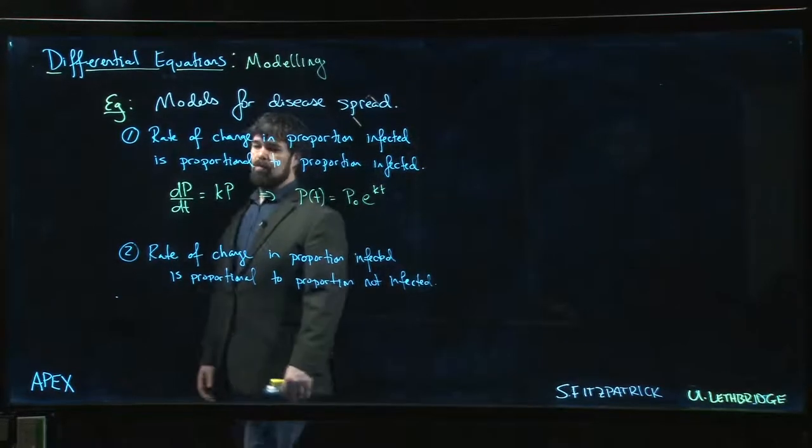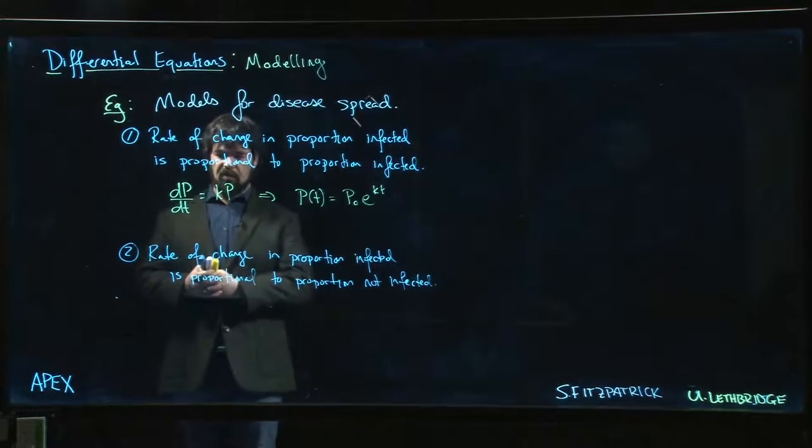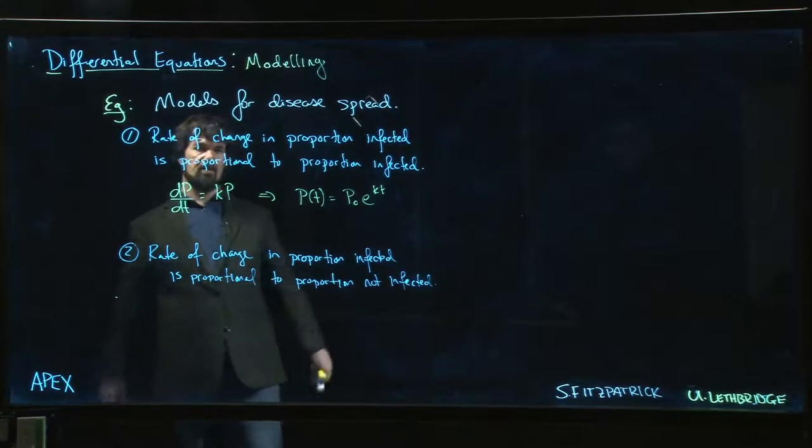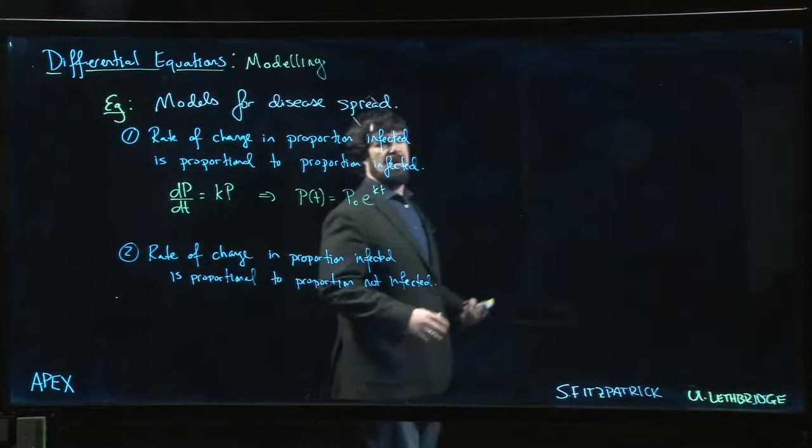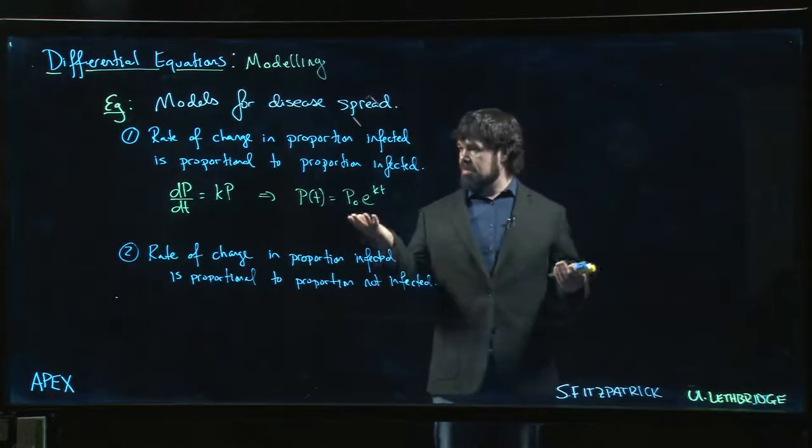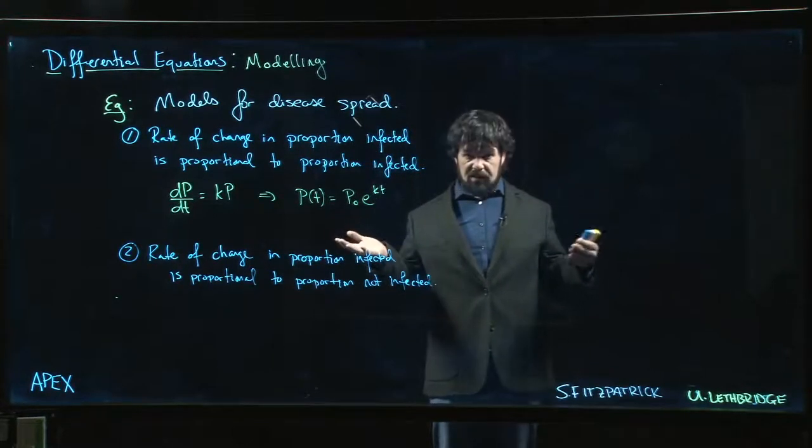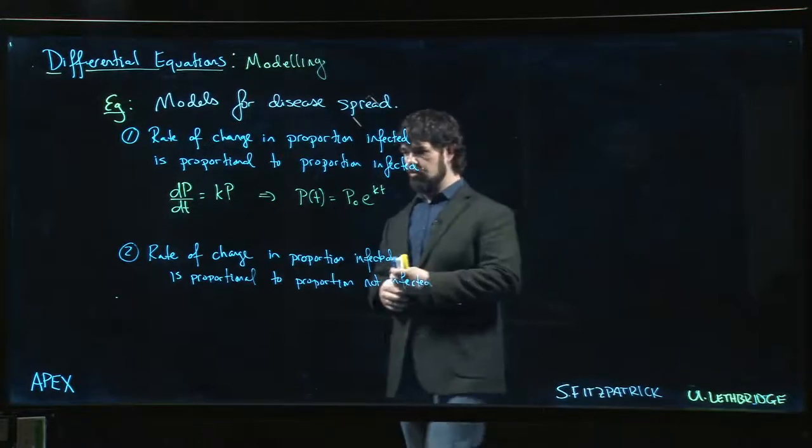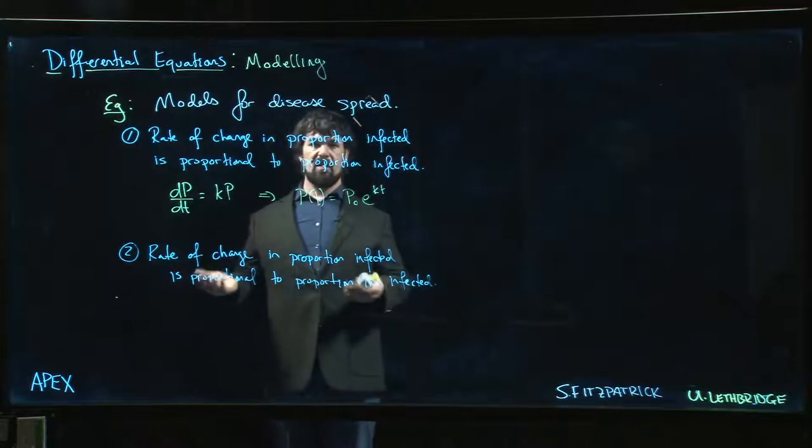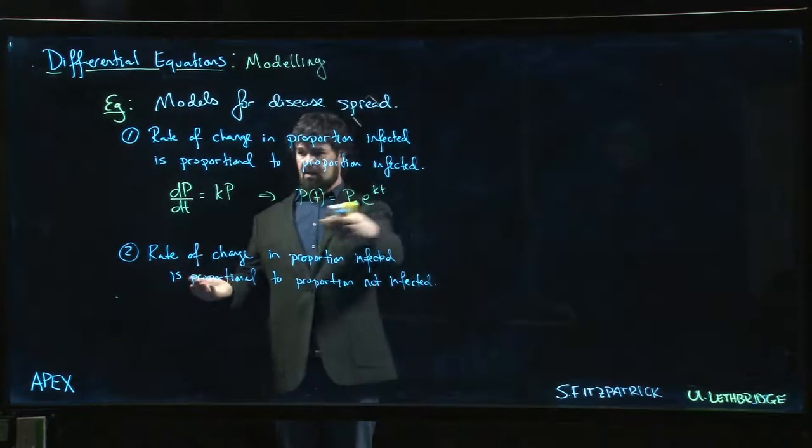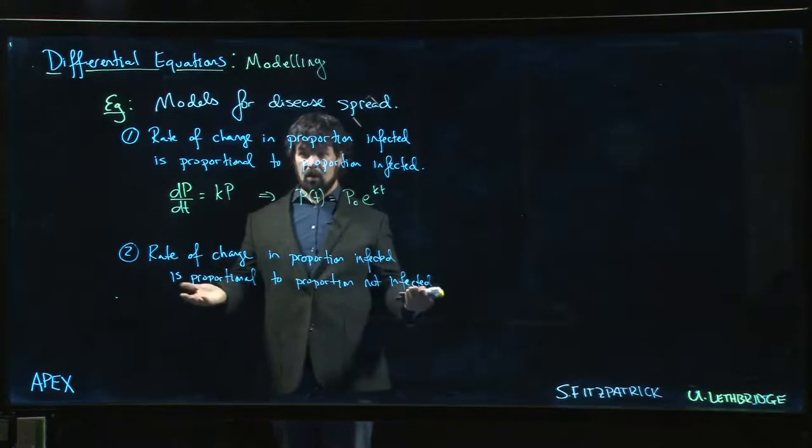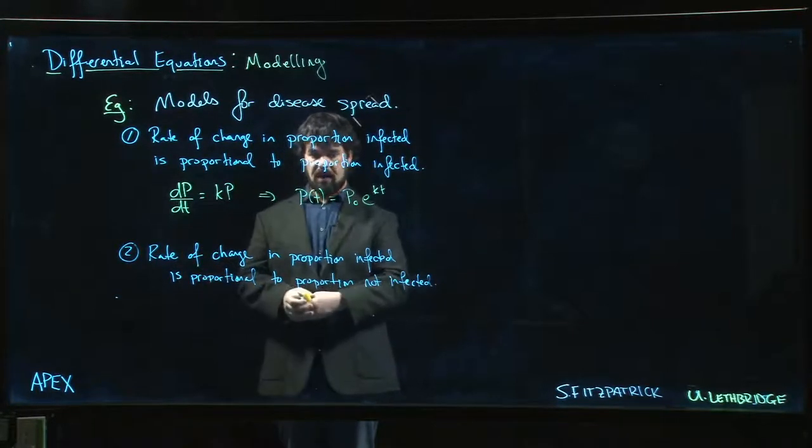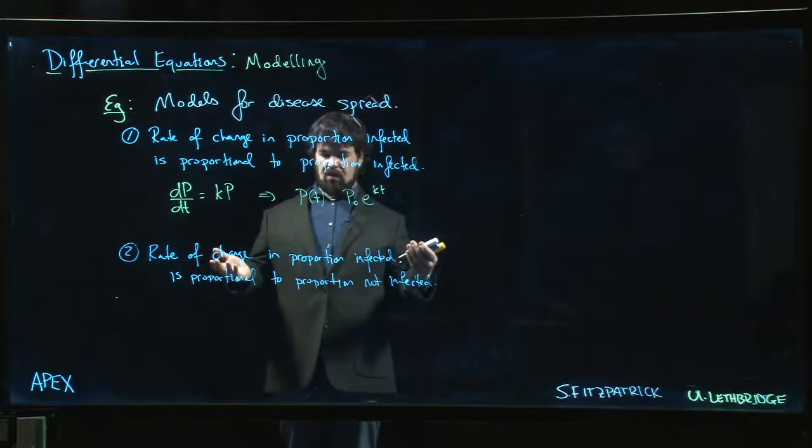So we could look at a different model. One of the things we didn't take into account in this model is that eventually everyone is infected. But we know that doesn't happen—some people are going to be immune or avoid the infection. If everyone is infected, there's nobody left to infect and the rate of change should go to zero. Once you hit 100% infection rate, there's nobody left to infect.